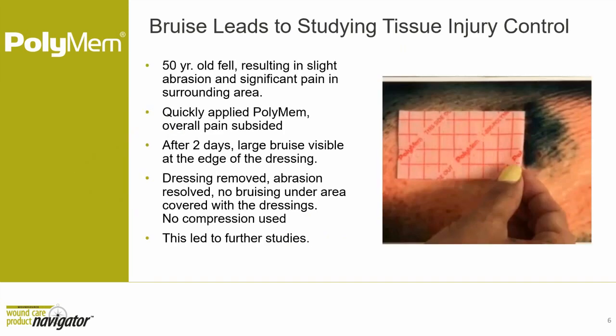PolyMEM was originally designed to be used on children who had burns. The goal was a dressing that wouldn't stick to the child, would be easy to remove, and would not require cleaning the wound bed during dressing changes because the dressing provided continuous cleansing. After the product launched, clinicians started mentioning to the company that patients' persistent wound pain was decreasing and they wondered why — something that then had to be investigated.